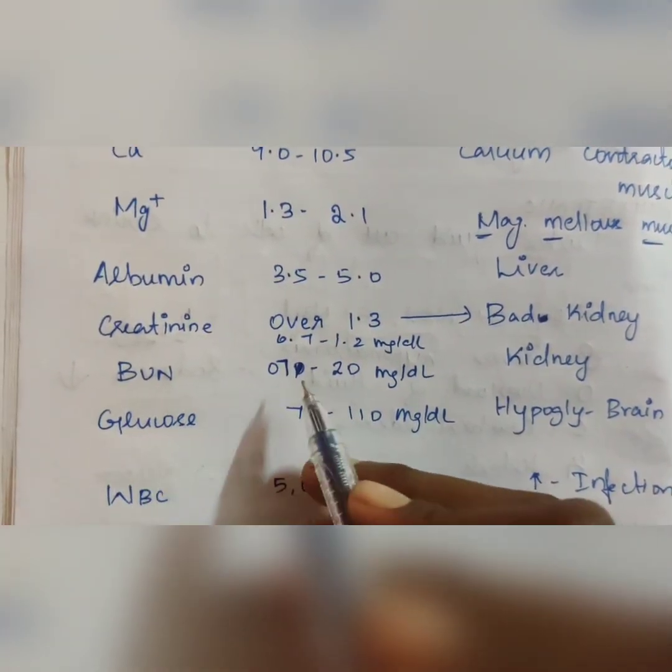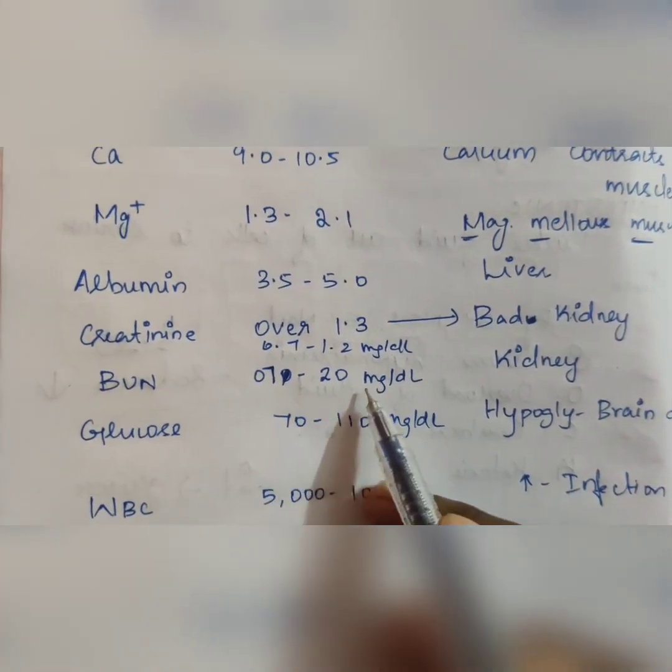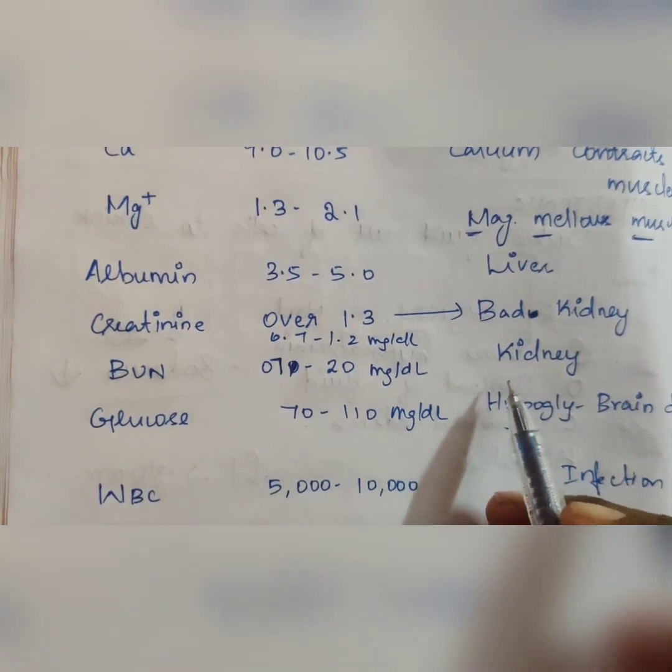Next, blood urea nitrogen. The level is 7 to 20 mg per deciliter. If there are changes, it indicates kidney changes.